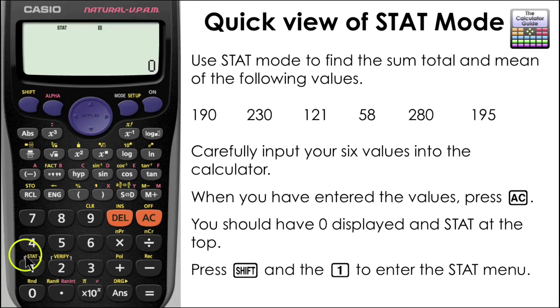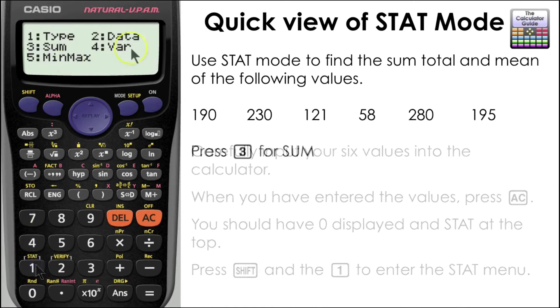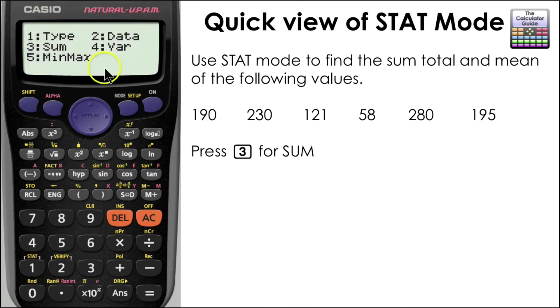Now we're going to press SHIFT and 1 to enter the STAT menu, which should give us a choice of options. Now the first two selections in this menu refer to going back and editing the data, the type of data, and if we wanted to edit the data we'd press 2.